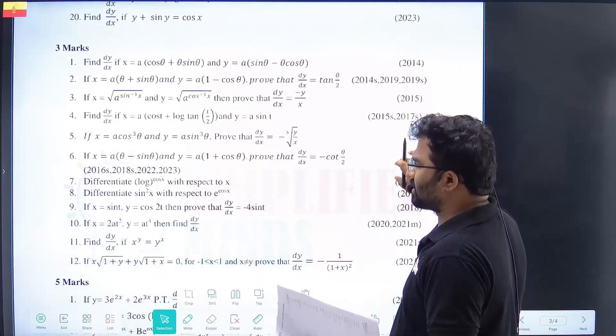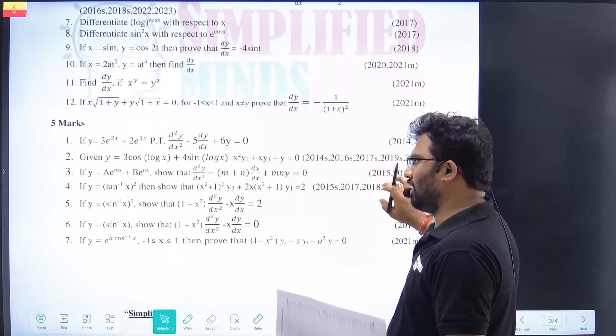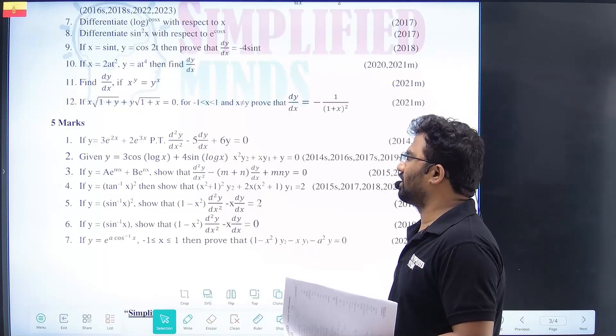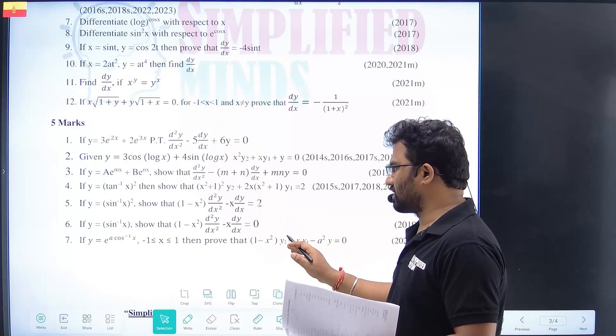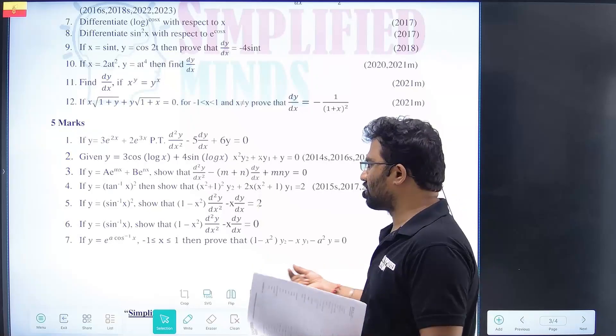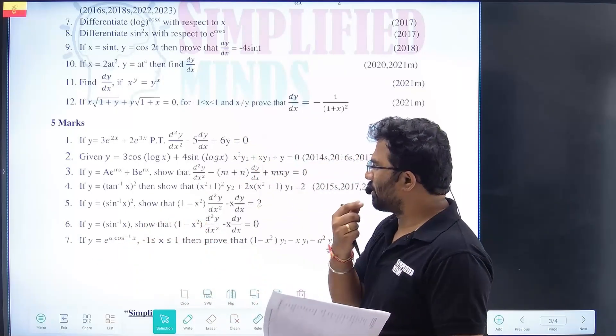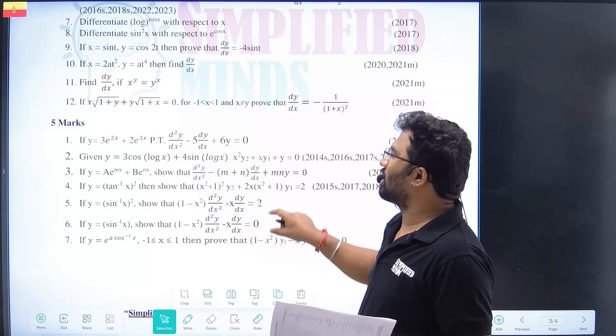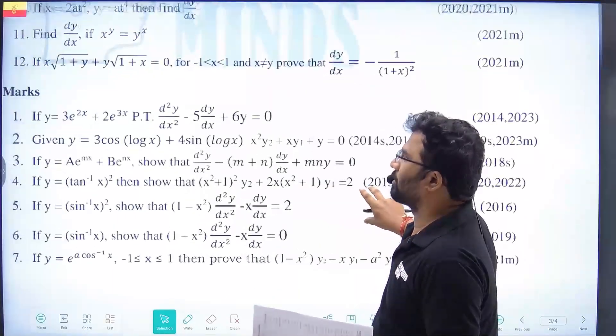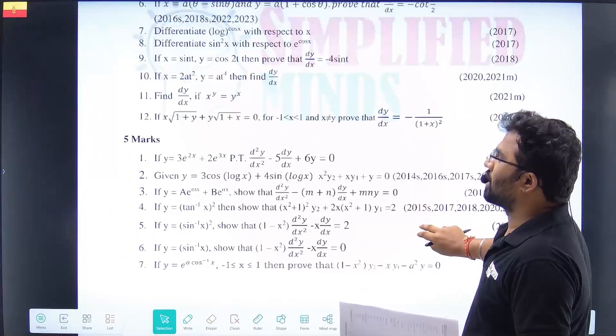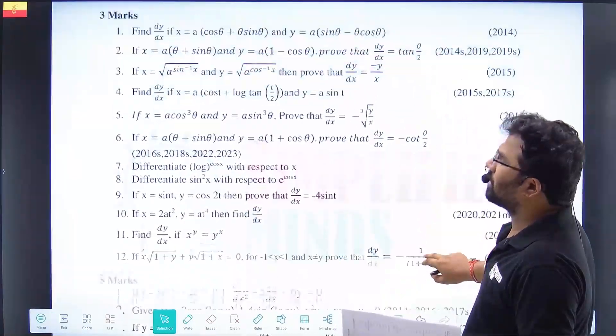The five markers are basically double differentiation questions - like 3e^(2X) and similar questions. Easy questions. Model paper 2021 had similar questions. Practice most of these questions.